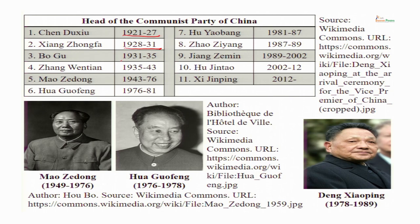Then Bo Gu was the leader from 1931 to 1935, supported by the Soviets. He was found to be inefficient and was removed. Zhang Wentian was the General Secretary from 1935 to 1943, and eventually he was overthrown by Mao Zedong when Mao started the party rectification.